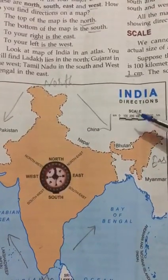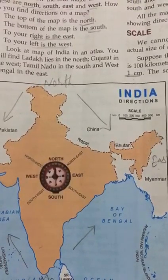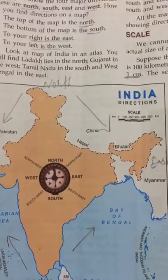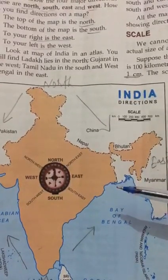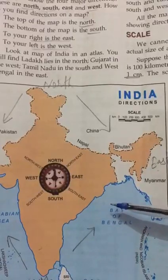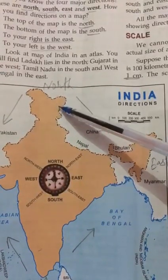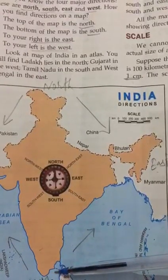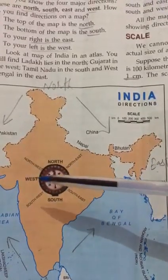Do you know how many directions there are? Yes, 4 major directions. These are: North, South, East, and West. Do you know where these directions are? I will explain briefly. The top of the map is the North, the bottom of the map is the South, to your right is the East, and to your left side is the West.